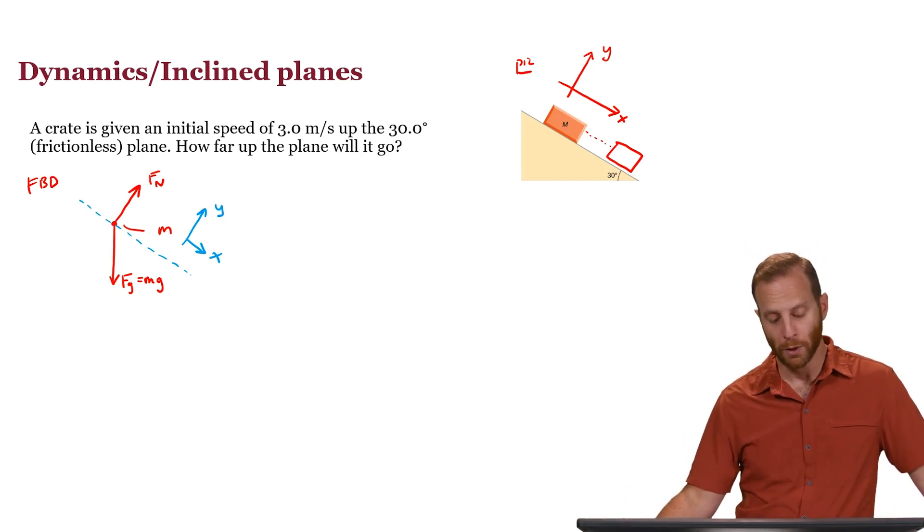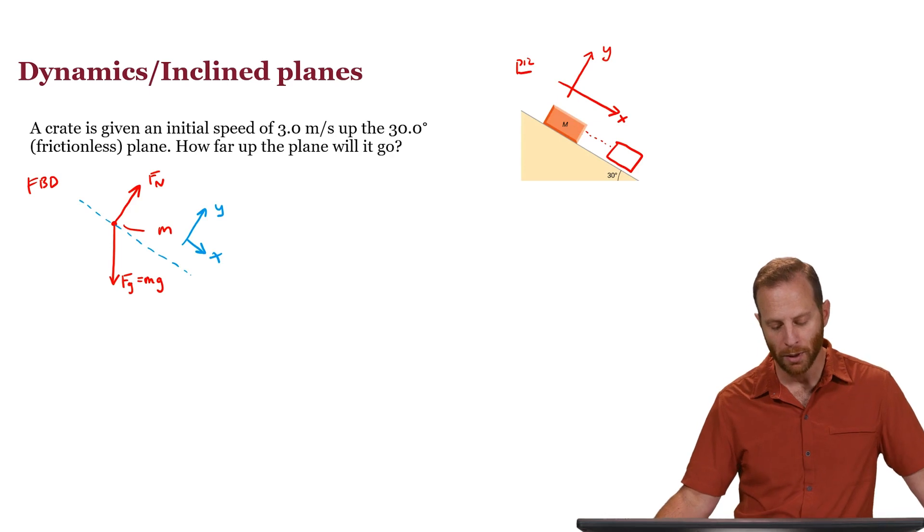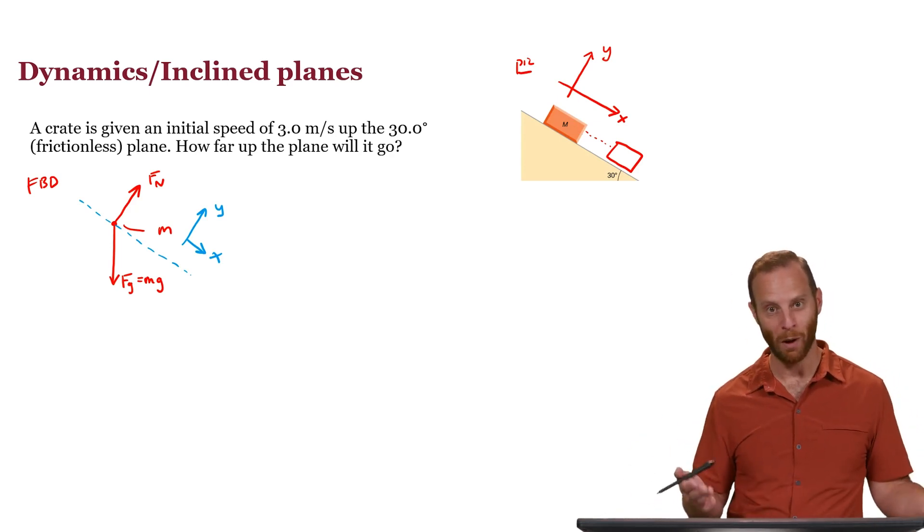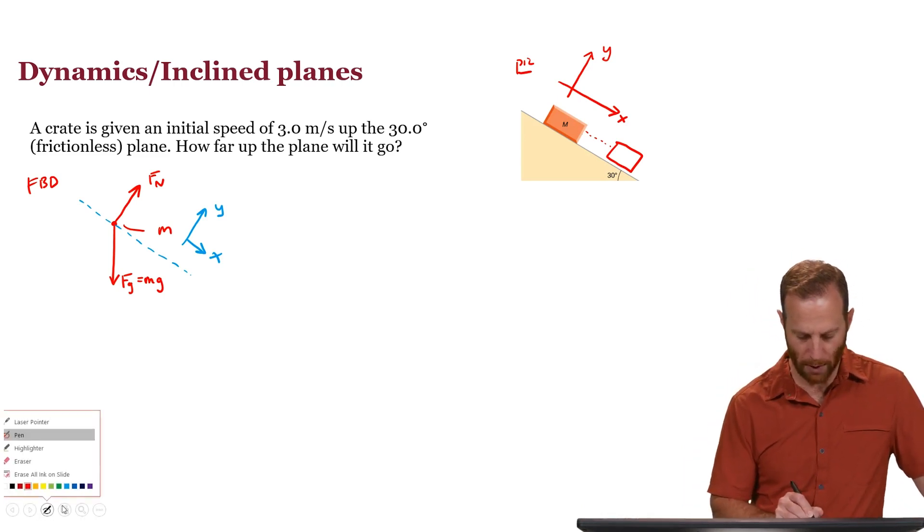The force that a surface provides that points perpendicular in all senses to that surface. There are only two forces. The normal force is convenient as we've chosen our coordinates because it points purely in the y direction, but you notice the force of gravity points both in the x and the y direction according to those coordinates. So what we're going to do then is take the force of gravity and break it up into components that are convenient.